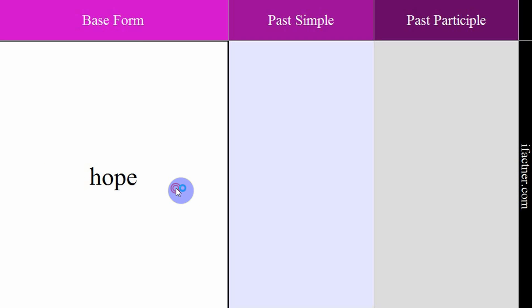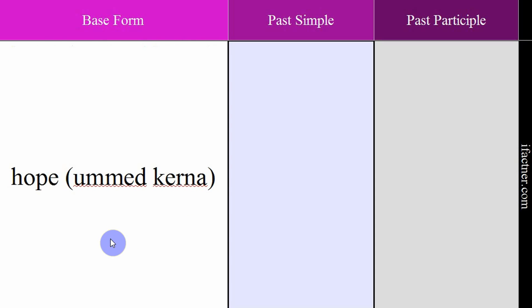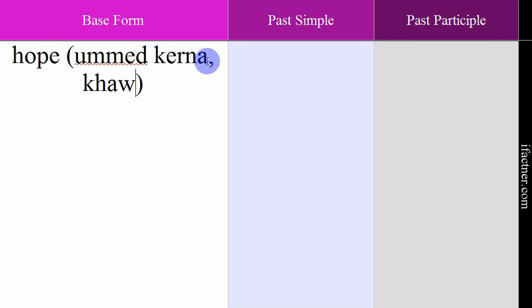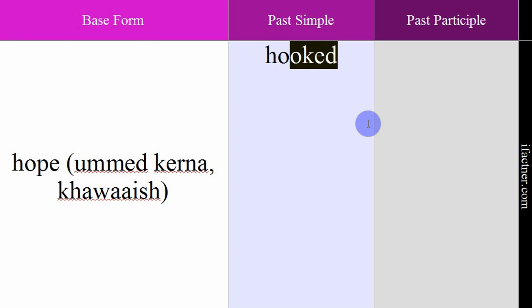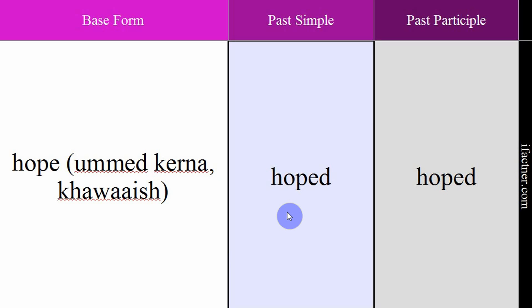The next verb is 'hope', meaning umeed karna — to hope or wish for something. Example: 'I hope to go there.' — Mein umeed karta hoon ke mein wahan jaoon, meri khwaaish hai ke mein wahan jaoon. Past simple and past participle: hoped. Past simple: 'She hoped to come here.' — Uski khwaaish thi ke woh yahan aaye. Past participle: 'She has hoped to go there.' — Usne umeed ki hai ke woh wahan jaaye. Verb: hope. Meaning: umeed karna, khwaaish karna. Past simple: hoped. Past participle: hoped.